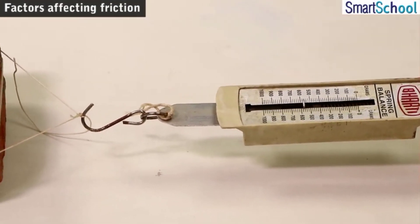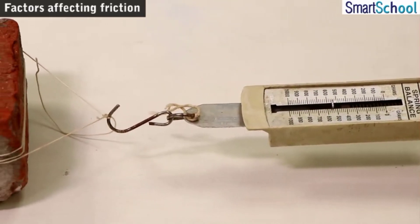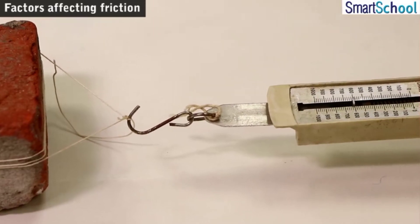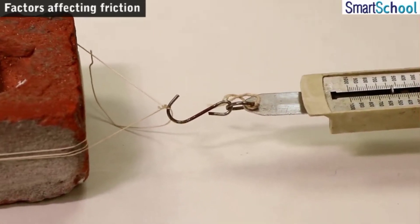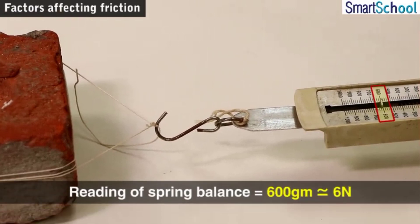When the brick just begins to move, we get an estimate of the force of sliding friction between the contact surface of the brick and the table. In this case, the reading of my spring balance comes out to be 600 grams, which is approximately equal to 6 Newtons.